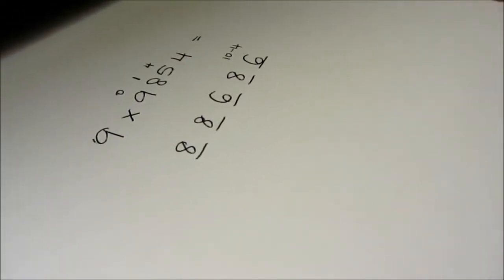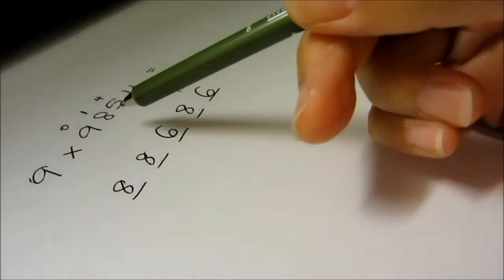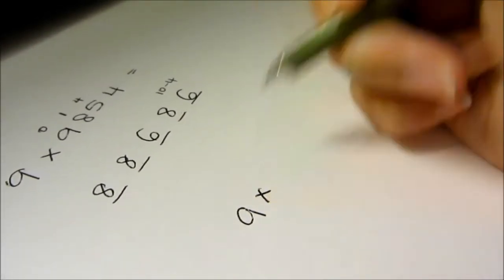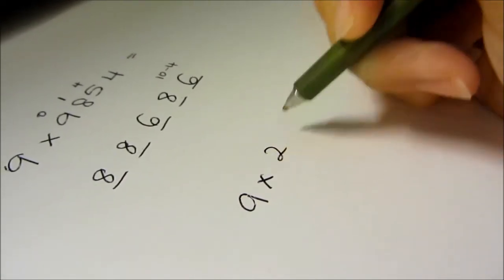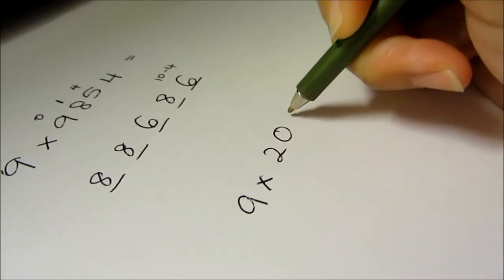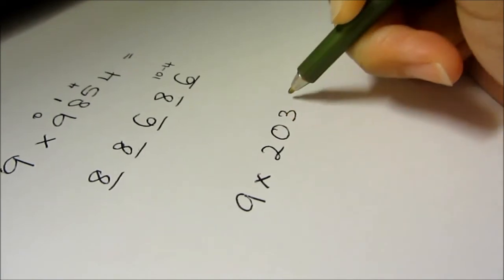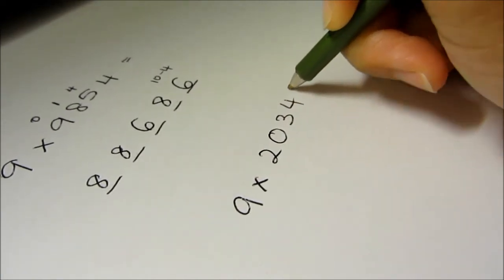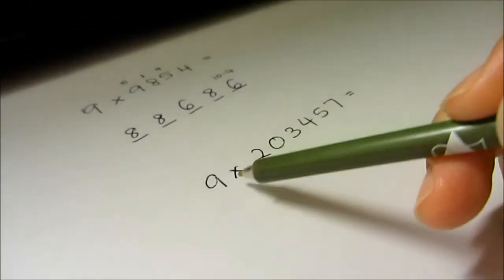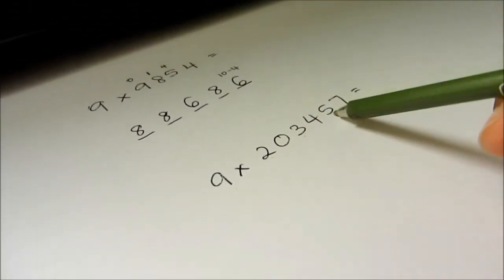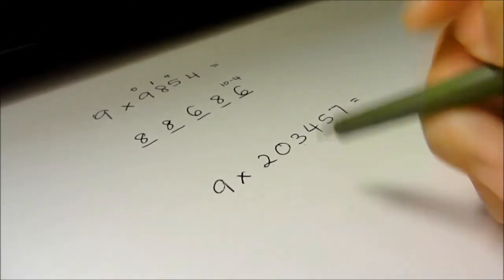Now I'm going to multiply another number, maybe a smaller or bigger one. Let's say it's 9 multiplied by 2, 0, 3, 4, 5, 7. So it's going to have 1, 2, 3, 4, 5, 6, 7 — a 7-digit answer. 1, 2, 3, 4, 5, 6, 7.